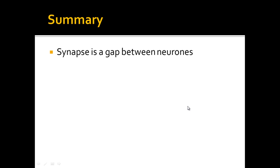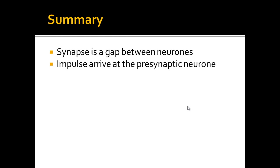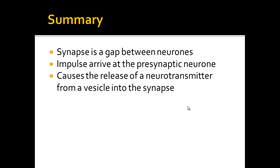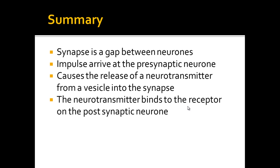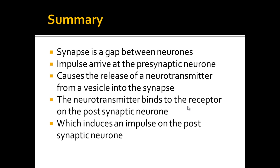In summary: a synapse is a gap between neurons. For a signal to bridge across a synapse, the impulse first needs to arrive at the pre-synaptic neuron — the one before the synapse. A neurotransmitter, which is a chemical released from a vesicle into the synapse, then diffuses across and binds to a receptor on the post-synaptic cell — the one after the synapse. This induces an impulse on the post-synaptic neuron, allowing the impulse to continue on to the effector or its target cells.